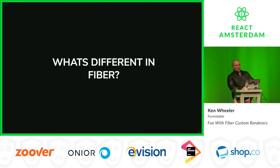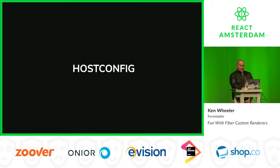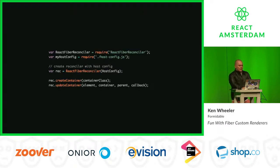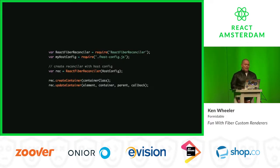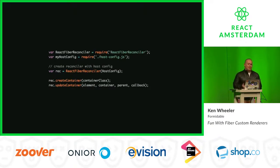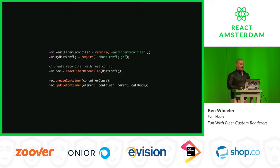In Fiber this gets a little bit easier — you have a more structured way to do this rather than just overriding stuff, and it's called a host config. Here's an example of the Fiber reconciler: you require it, pull in your host config, create it by passing the host config right into the Fiber reconciler. You then have two core methods — createContainer and updateContainer — which are pretty much the bread and butter of your rendering.